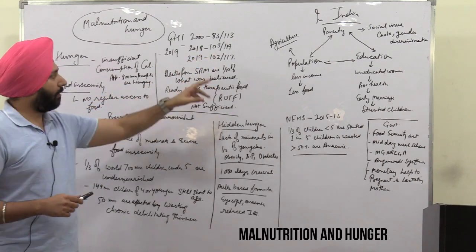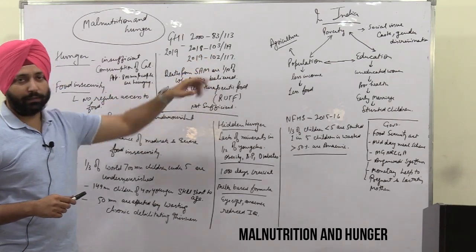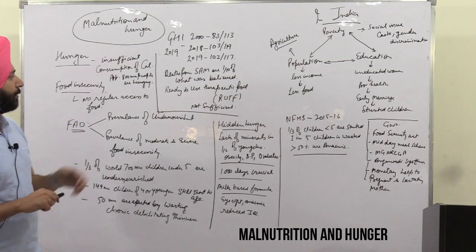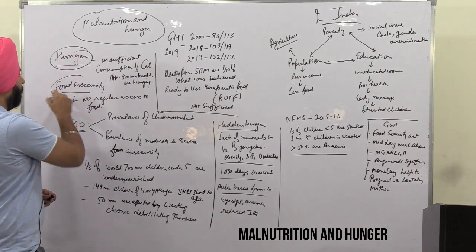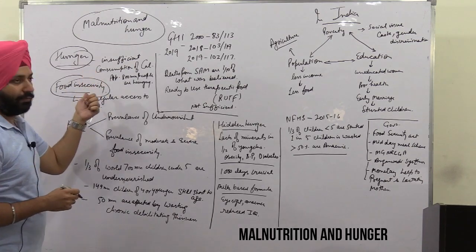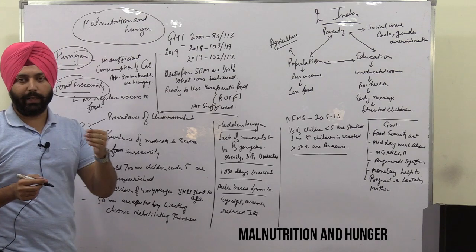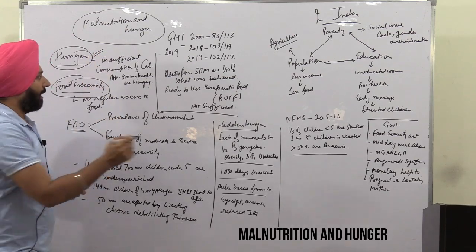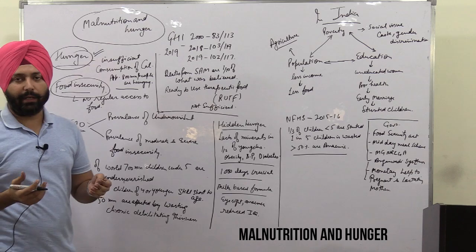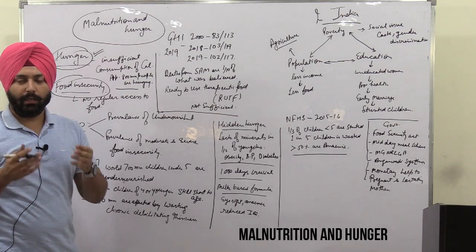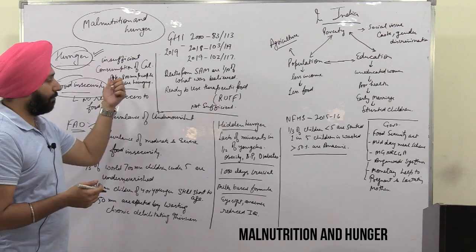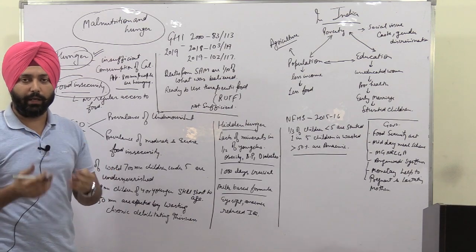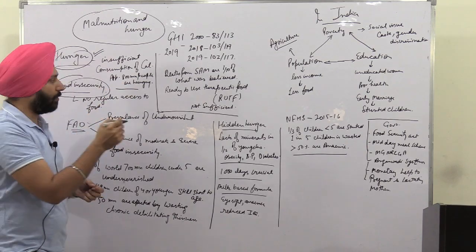First, let's look at two key terms: hunger and food insecurity. These two terms are different from each other. Hunger refers to insufficient intake of calories. When we are not getting sufficient amounts of food and our caloric intake is inadequate, that is when hunger occurs.